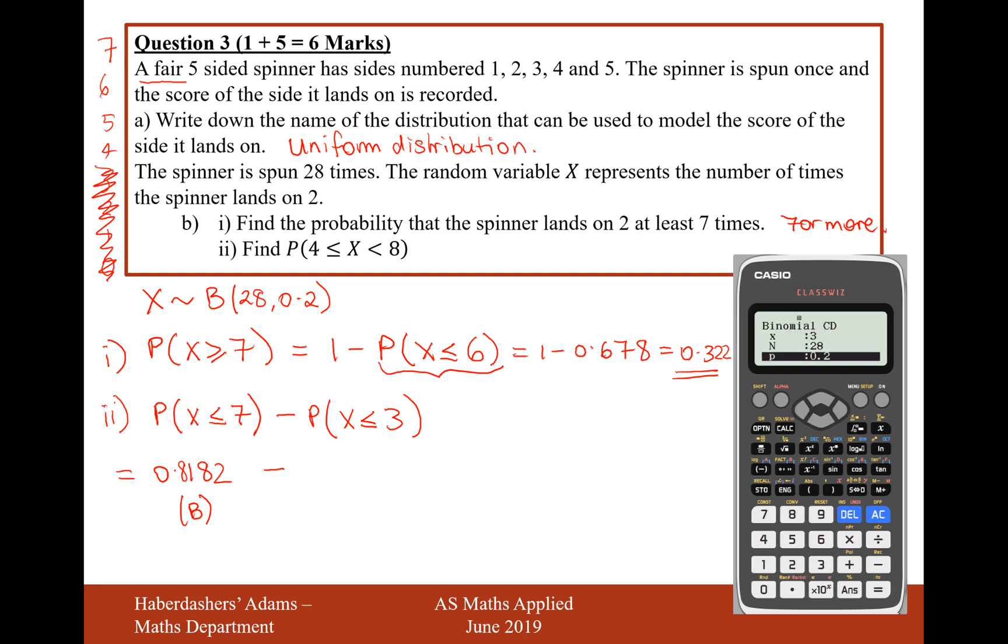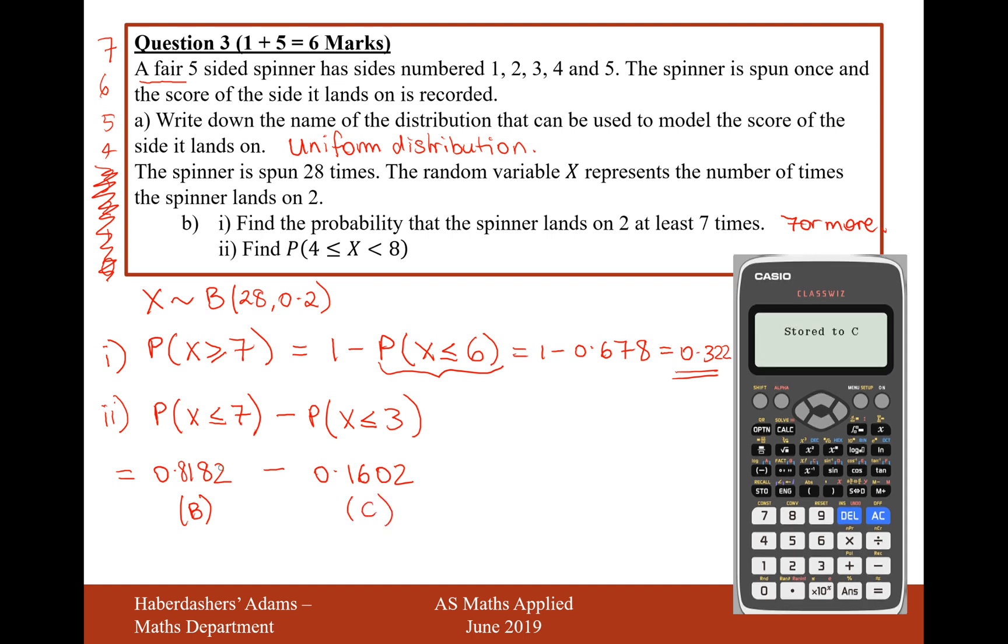Now, I've got to subtract the probability of scoring 2 on a spinner 3 or fewer times. And that's going to give me an answer of 0.1602 to 4 significant figures. And I'll store that value as C on my calculator. And when I do the subtraction of these two values, it will leave me with the probability of scoring in between 4 to 7 successes.